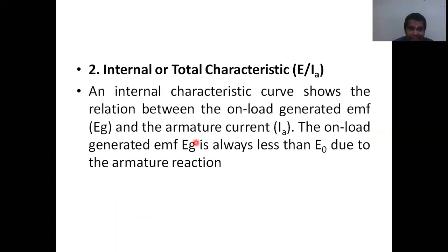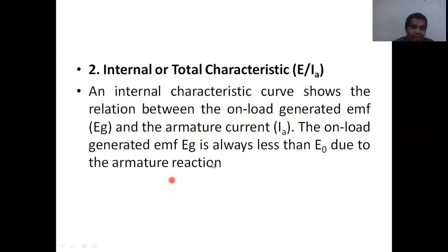The internal characteristics shows the relation between the no-load EMF and the armature current. The no-load EMF is always less than E-naught (open circuit voltage) due to armature reaction. Armature reaction occurs due to the presence of armature current, so the generated EMF is always lesser than the open circuit voltage E-naught.